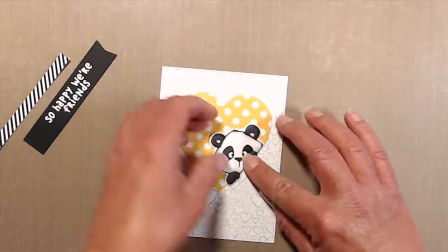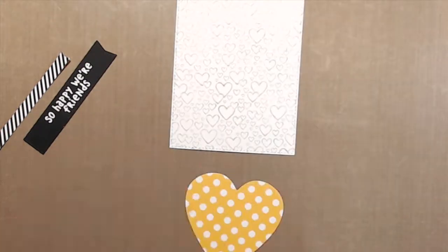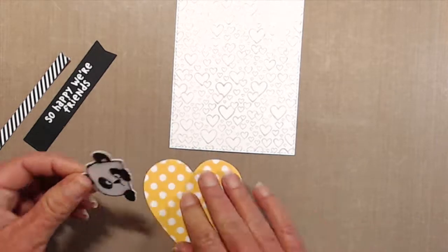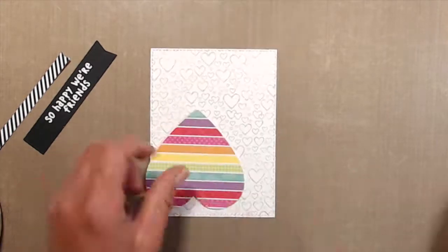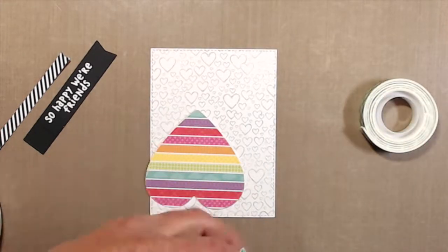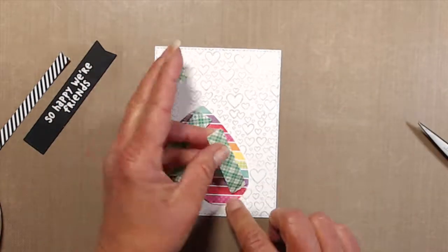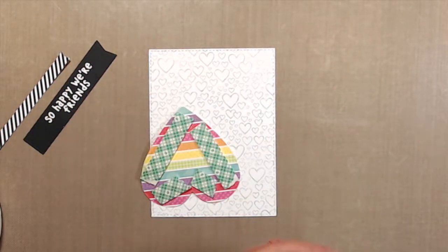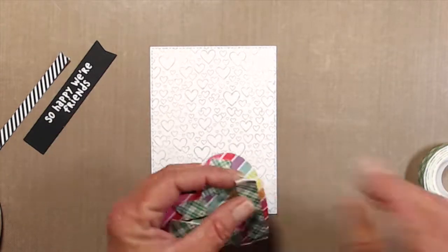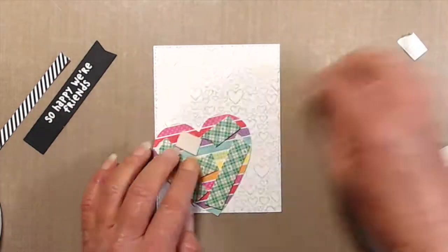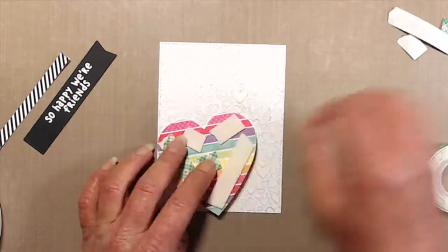From there, it was just a matter of putting everything together to finish up the card. I die cut the panda using the coordinating die and adhered that to a yellow polka dot heart. The heart is from the Stacking Hearts dies from Honey Bee Stamps. Added a bunch of foam tape to that and adhered that to the top of the background panel that I had previously stamped.